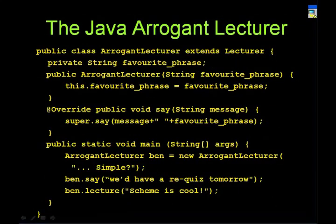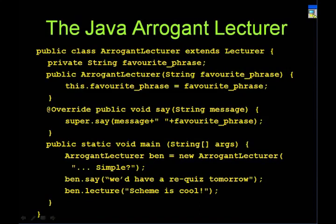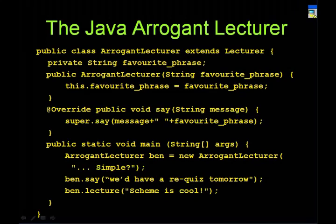Finally you have the arrogant lecturer who turns out to be someone named Ben. ArrogantLecturer Ben = new ArrogantLecturer(). Notice we are passing a parameter 'simple' to the constructor, so this.favoritePhrase equals 'simple'. When Ben says 'we have a quiz tomorrow', it calls the say method, which calls the superclass say method, passing the message plus 'simple'. So for everything he says, he just appends 'simple'. Ben lectures 'Scheme is cool — simple.' This really should be an annoying lecturer, not an arrogant one.